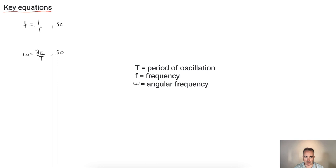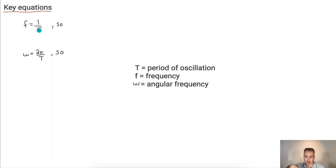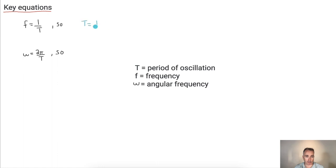Now we have some key equations. The frequency and period are related: frequency f equals one over period T, and the period is the time to complete one full oscillation. So the period T equals one over the frequency. Frequency has units of one over seconds, which is hertz.